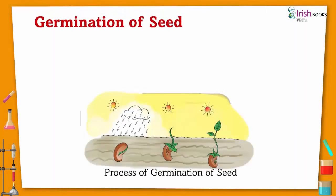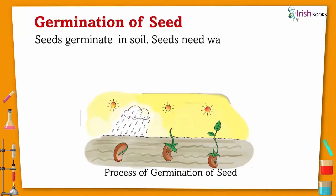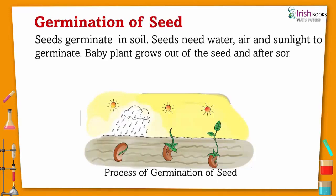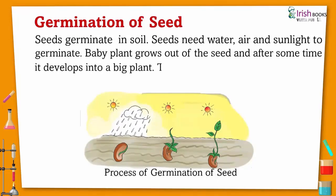Germination of seeds. Seeds germinate in soil. Seeds need water, air and sunlight to germinate. A baby plant grows out of the seed, and after some time it develops into a big plant. This is called germination of seed.